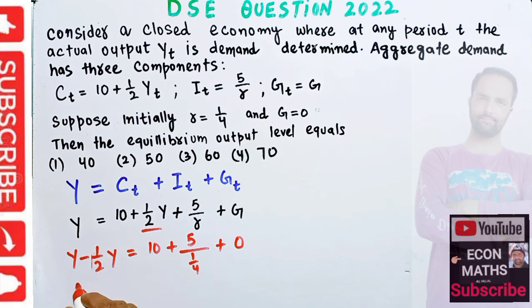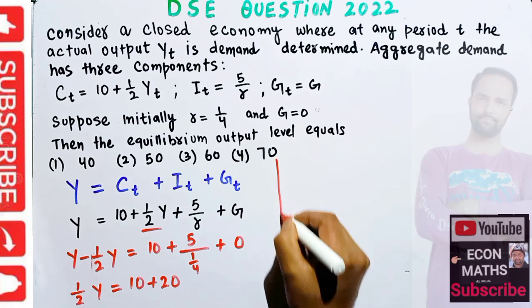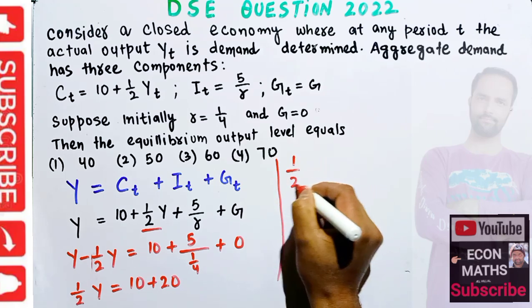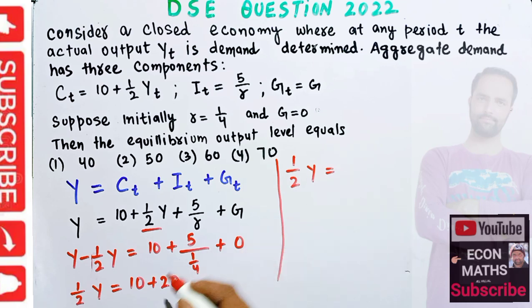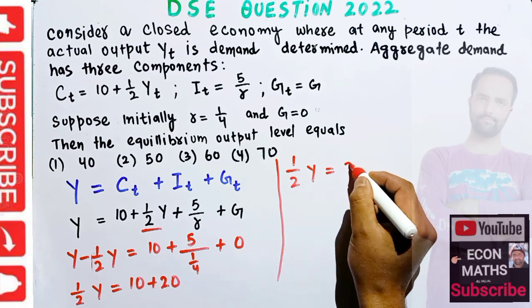Y - (1/2)Y gives us (1/2)Y should be equal to 10 plus, if I reciprocate 5/(1/4) it becomes 5×4 = 20. So (1/2)Y is equal to 20 + 10 = 30.